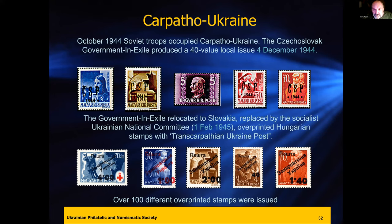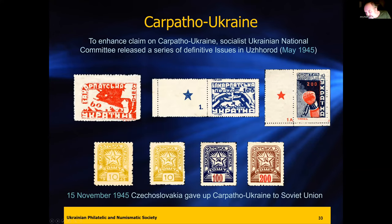There was a lot of back and forth with different political groups — Slovakia, the Hungarian socialist republic, the Ukrainian National Committee overprinting Hungarian stamps. Every political power that came in wanted to leave their mark with stamps, only to be replaced by the next group. These are the Soviet stamps — they used what looks like sewing machines to perforate them; they're fairly primitive. In November 1945, at the end of the war, Czechoslovakia gave up Carpathian Ukraine to the Soviet Union — that is why it is now part of Ukraine.